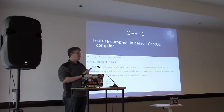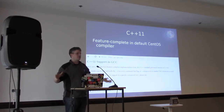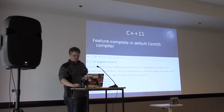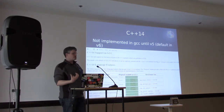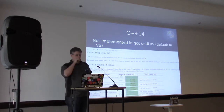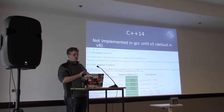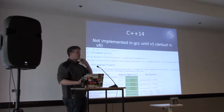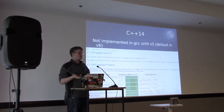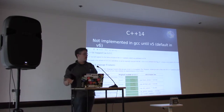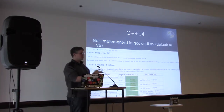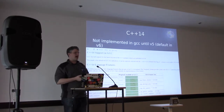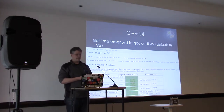There are some weird corner cases where minor bugs were fixed in C++11 features, but for the broad cases, everything you need is there. For C++14, that's not quite the case. None of the core features were implemented in GCC 4.8.5. A lot of them showed up in 4.9, the rest in v5, and it's actually the default in v6. GCC 8 just landed, so GCC is a relatively fast-moving compiler target.